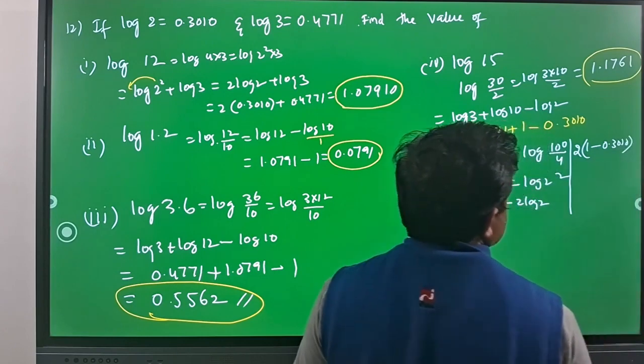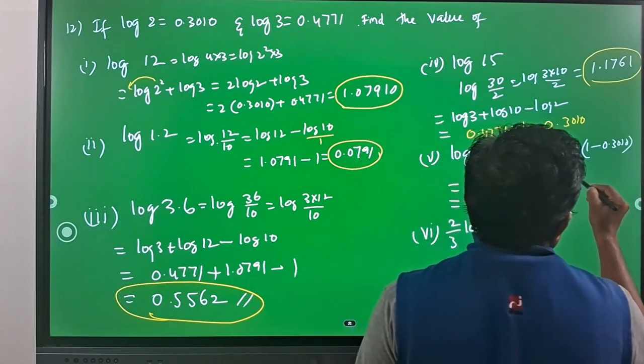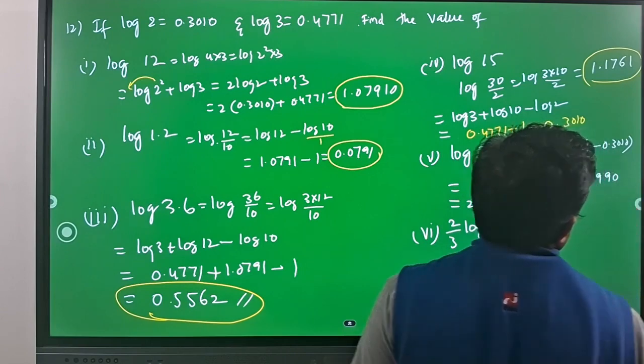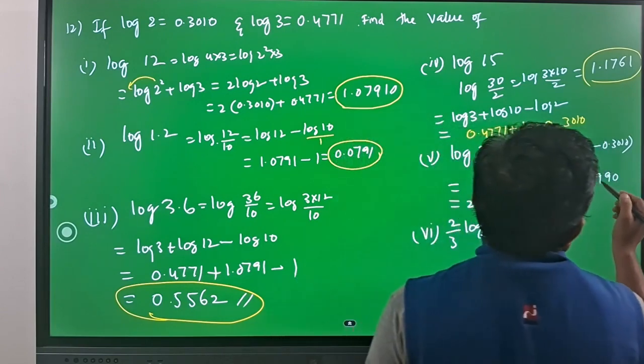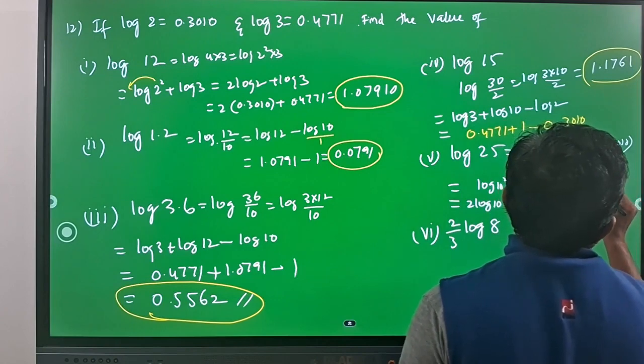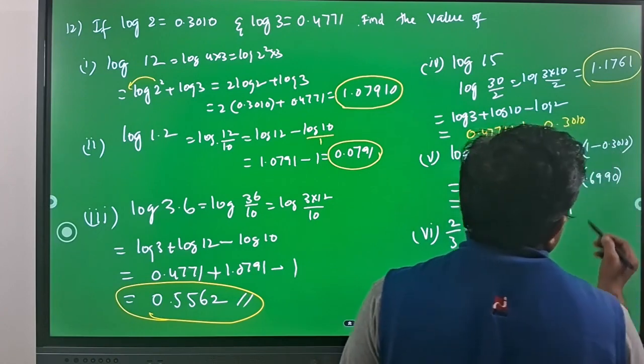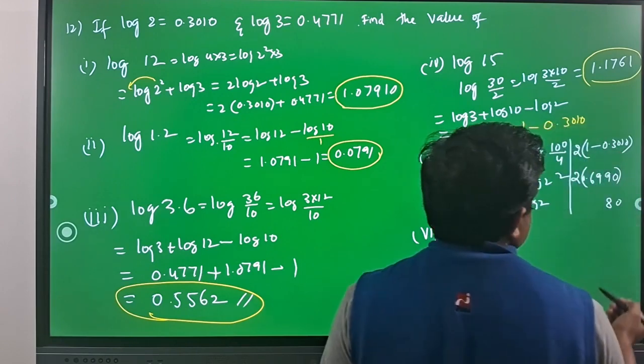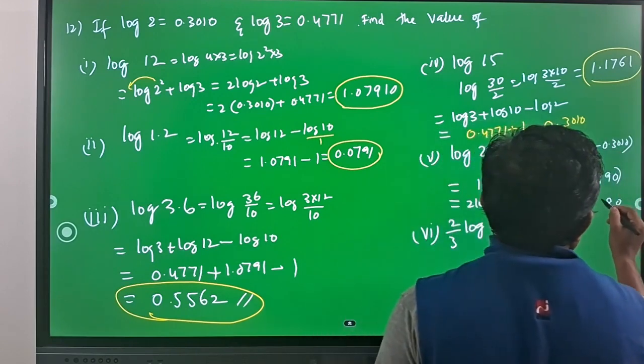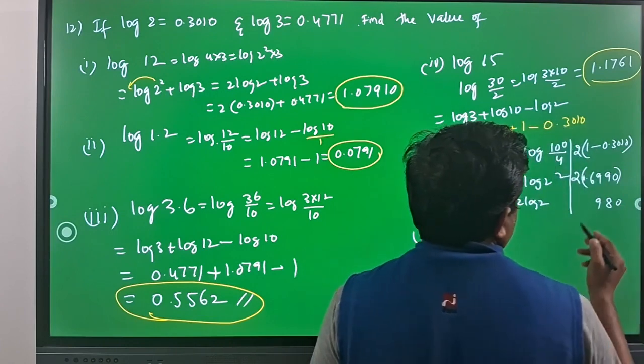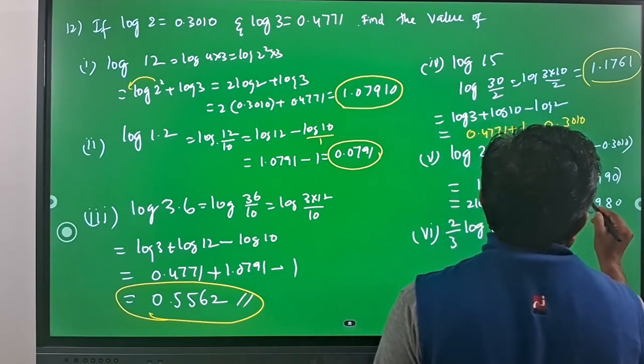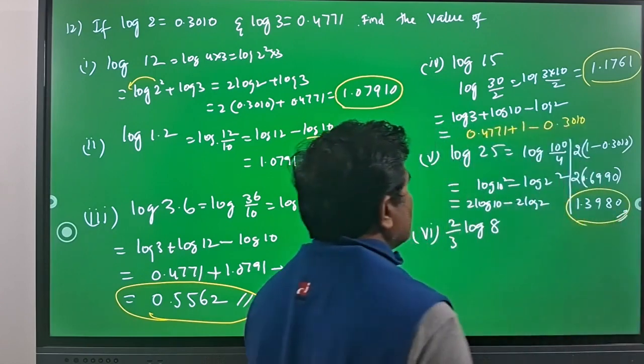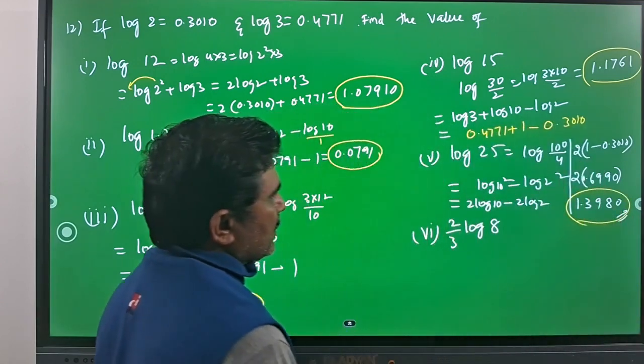Log 10 is 1 minus log 2 is 0.3010. By subtracting you will have 2 into 0.6990, which is 1.398. So 1.398 is the logarithm of 25.